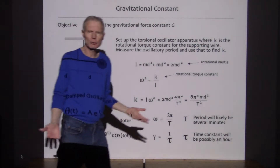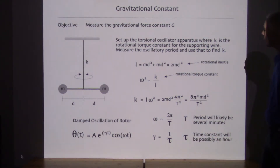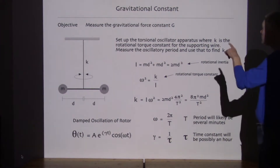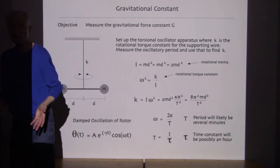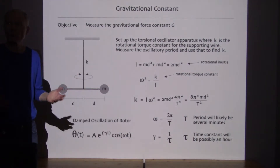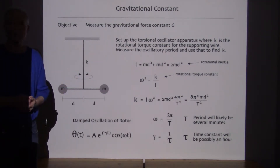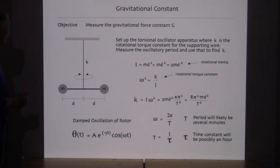Now you might think the gravitational constant belongs back in Physics 4A. But it turns out that we're now looking at the chapter on astrophysics, and the gravitational constant becomes one of the most — if not absolutely the most — important constant in determining properties of the universe at large.